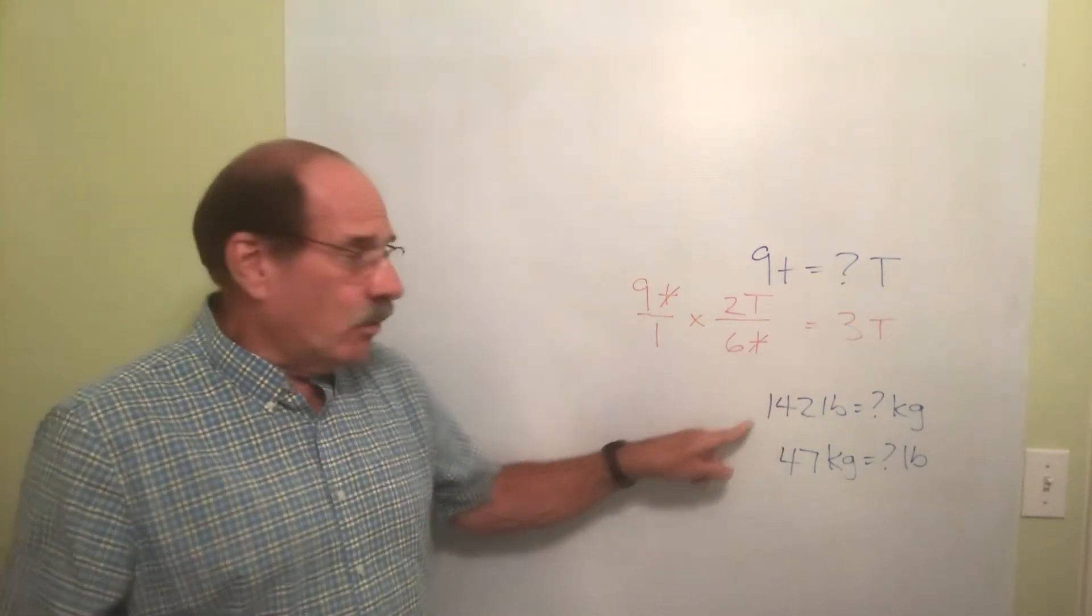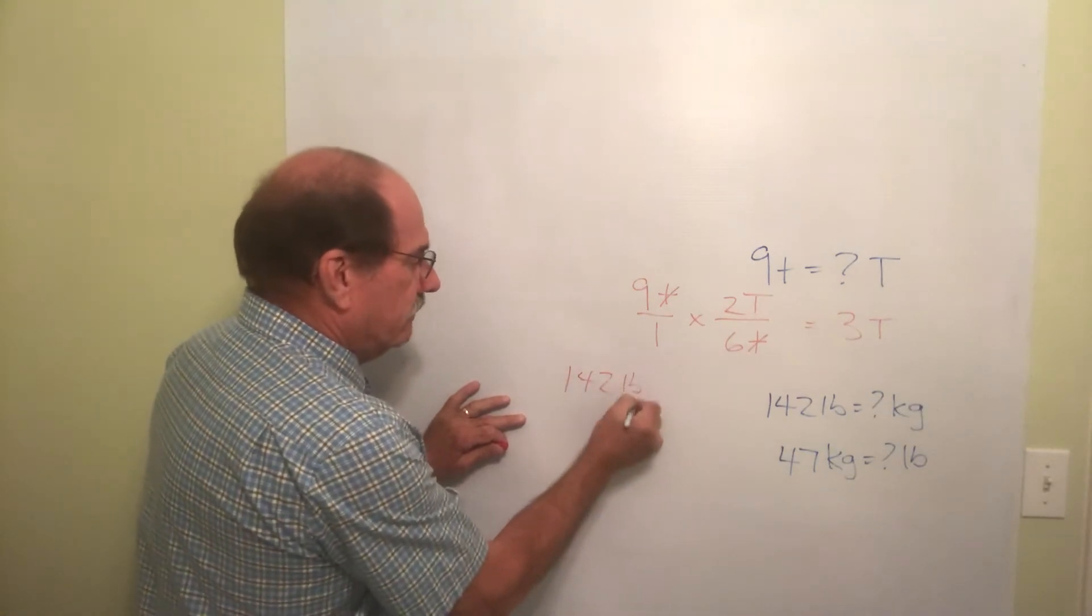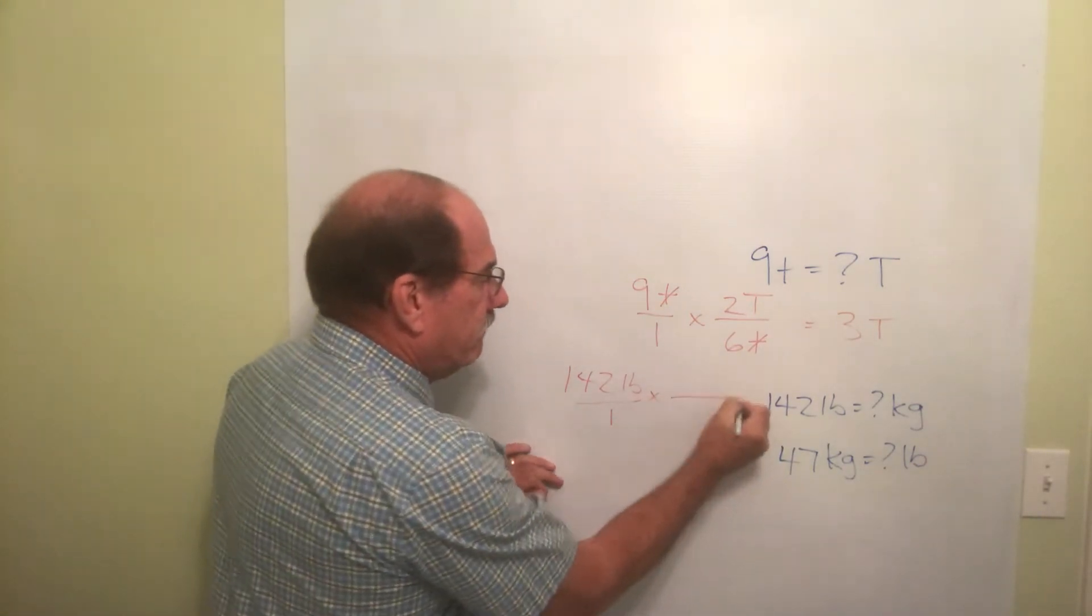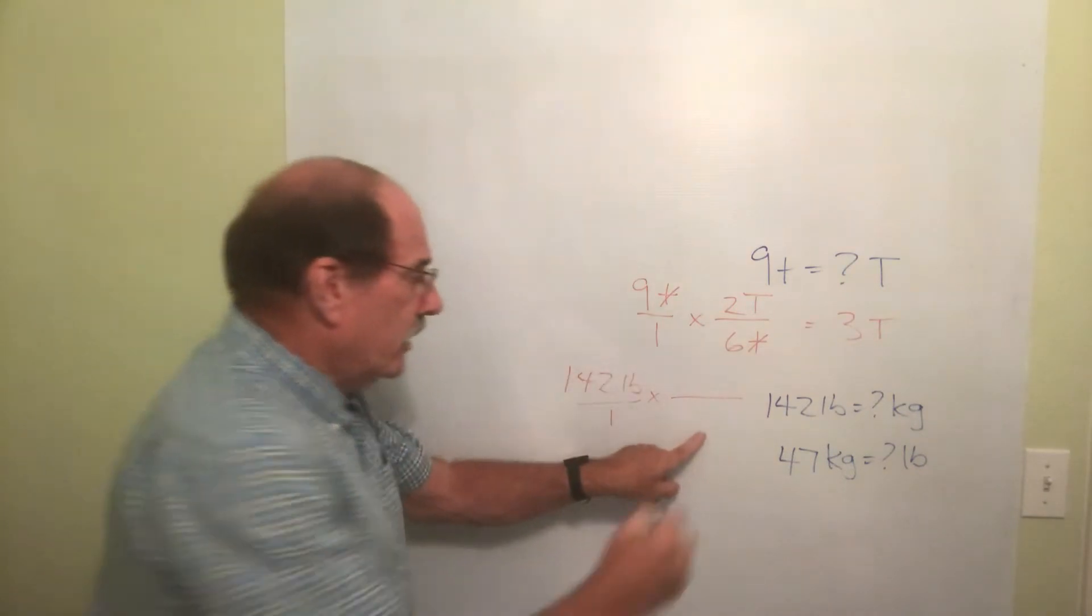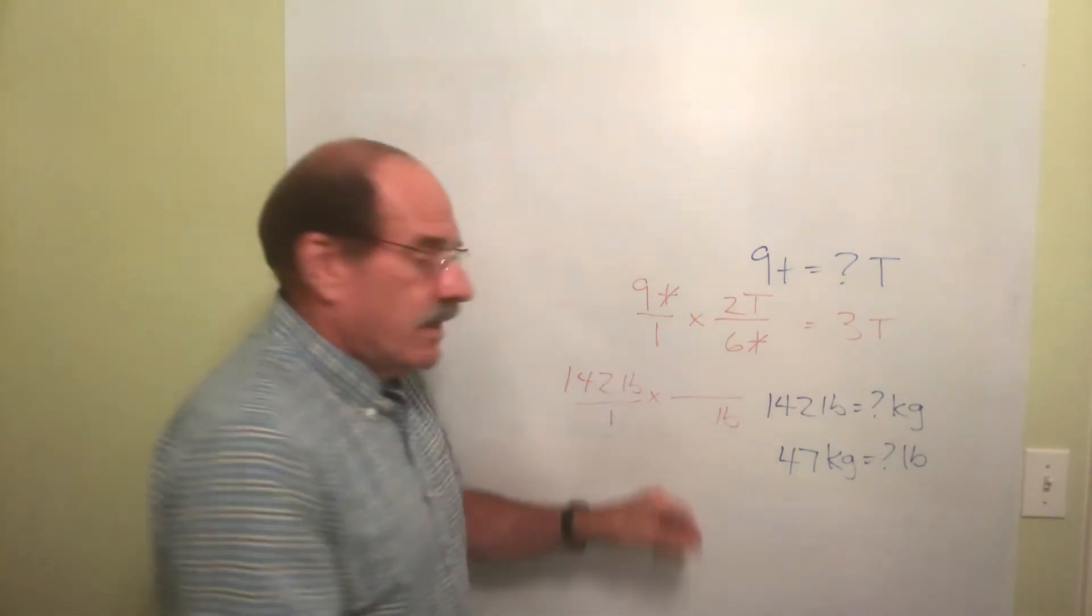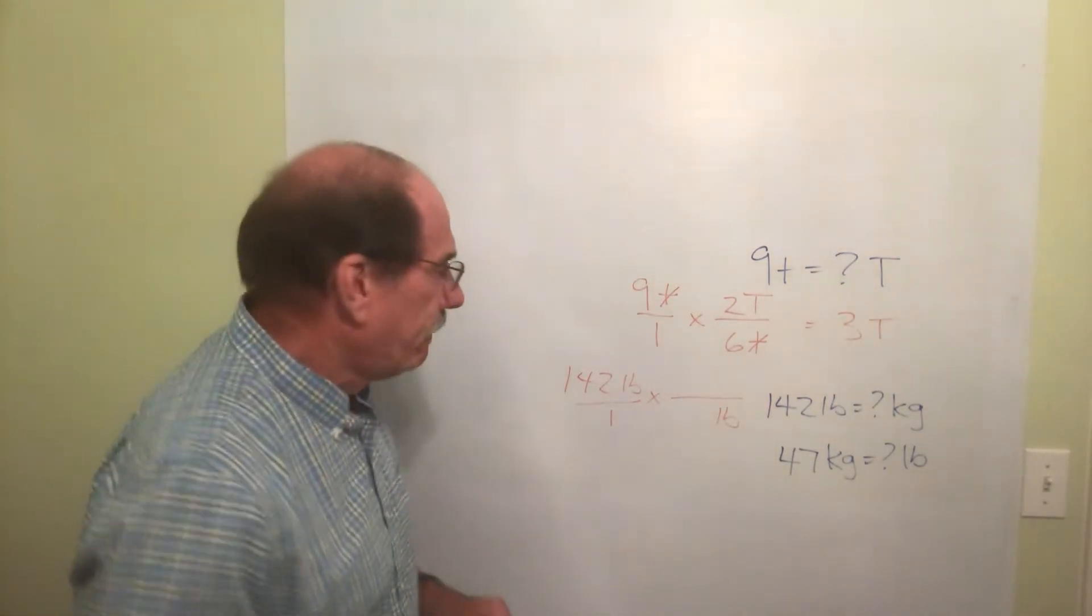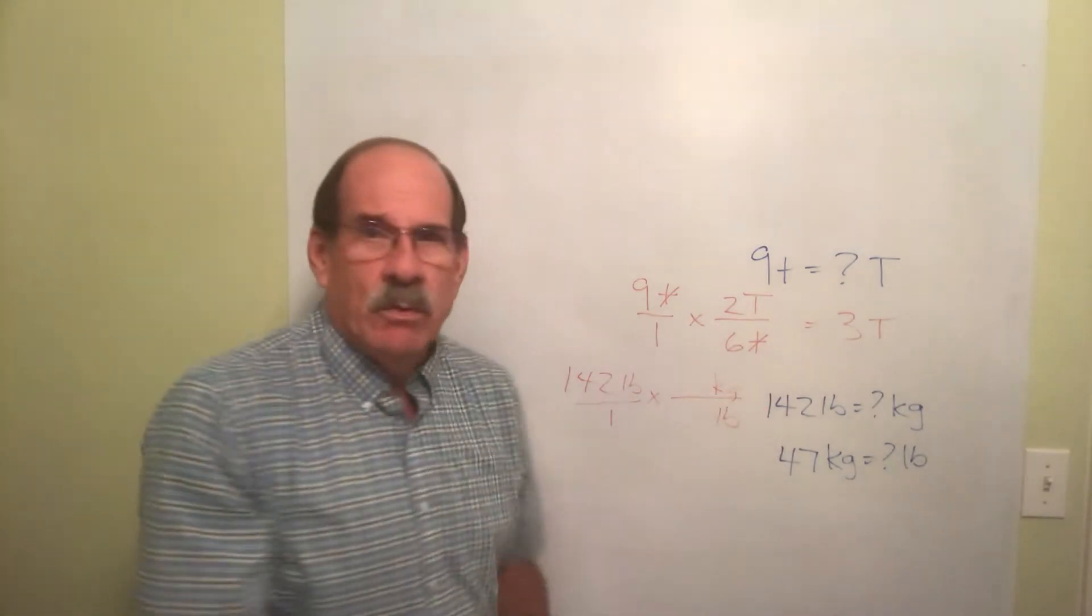So even though one is a metric measurement, if they're both not metric, you do it this way. Again, what I know: 142 pounds, put it over one. Now let's multiply by a second fraction where what's up here will go down here. What I'm looking for, kilograms, goes up here.